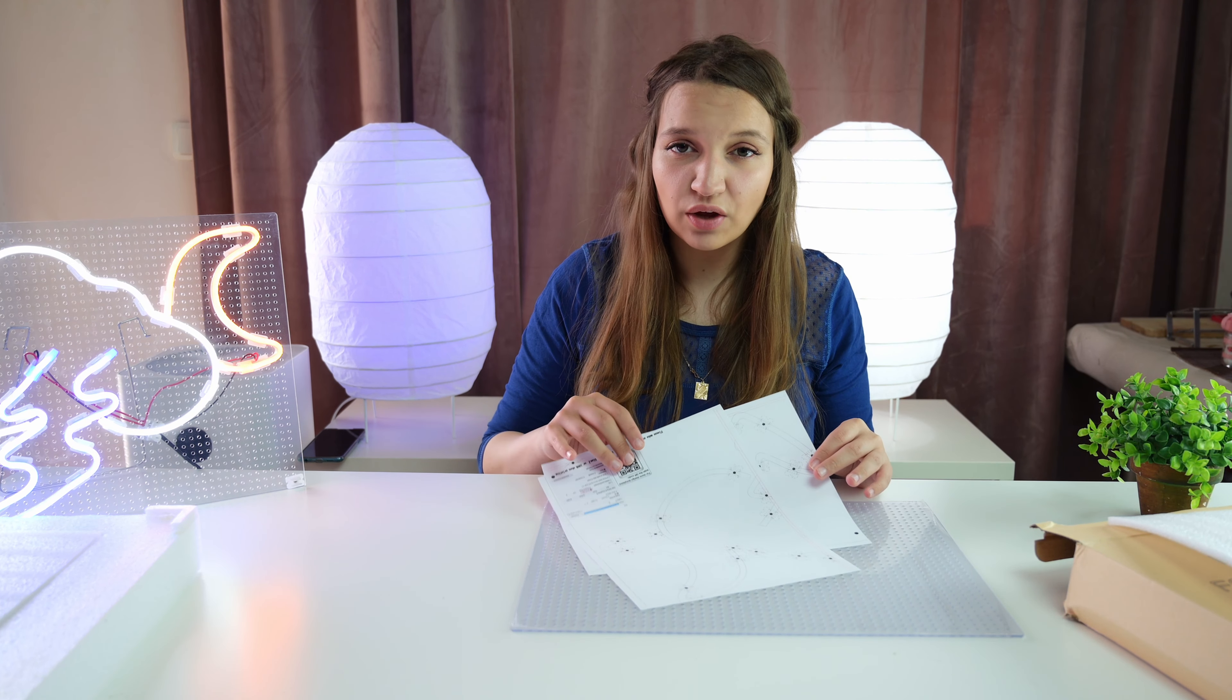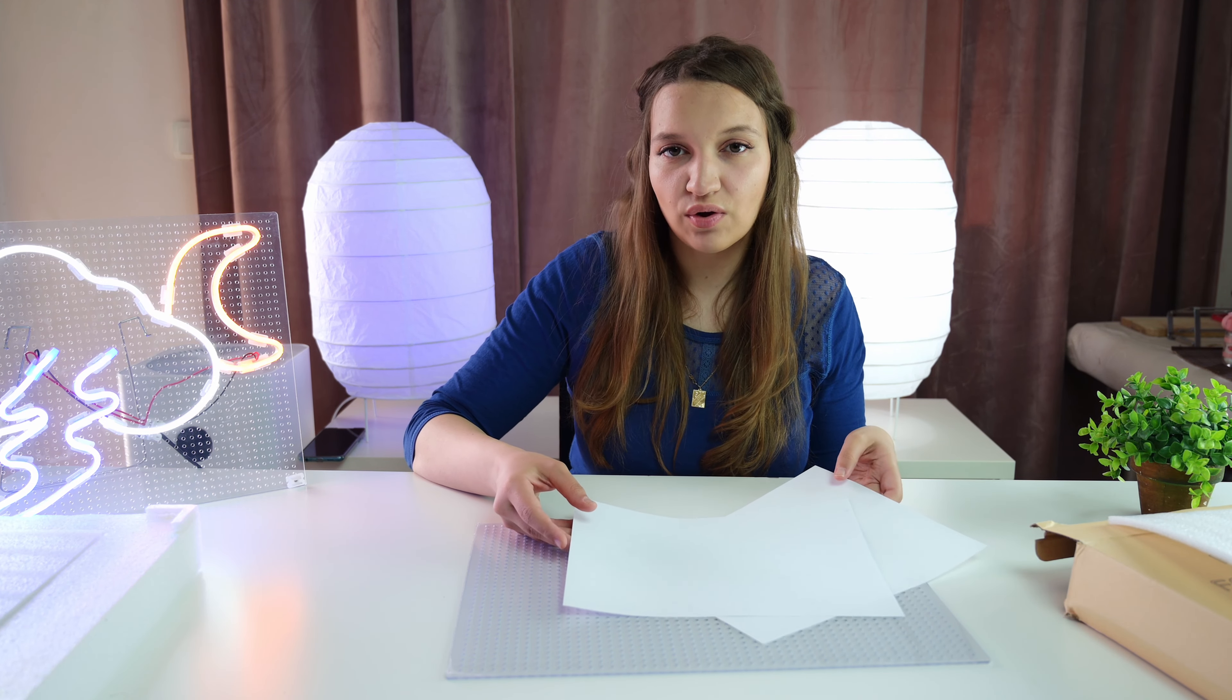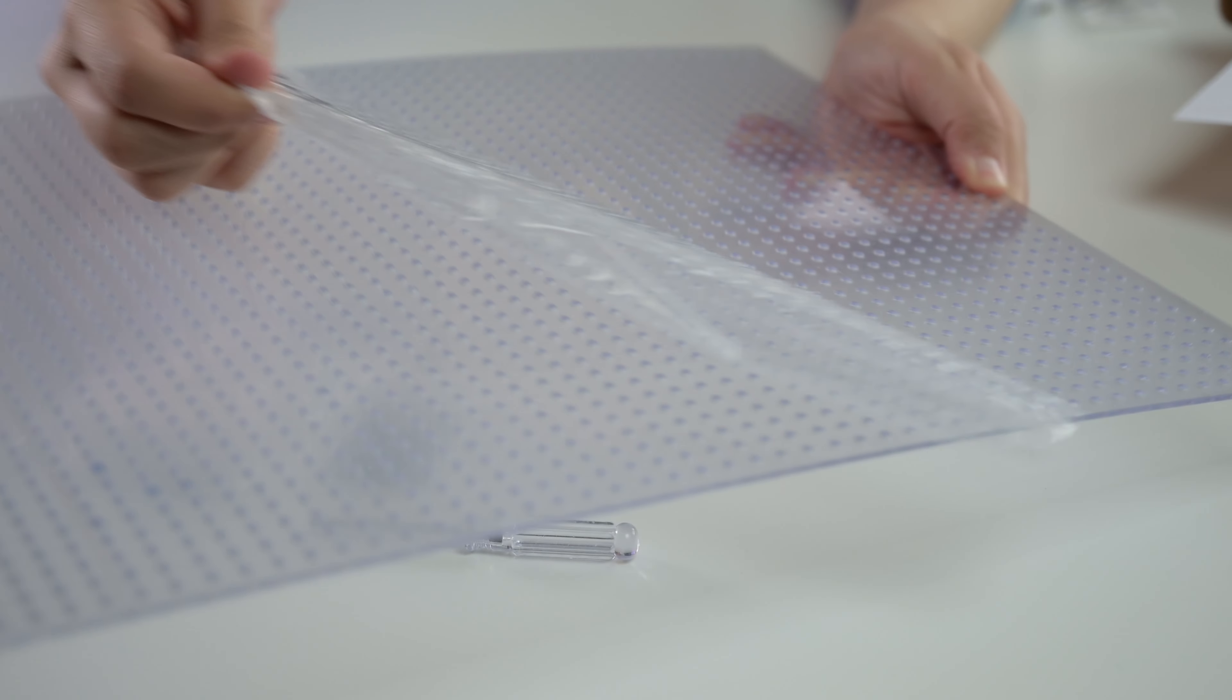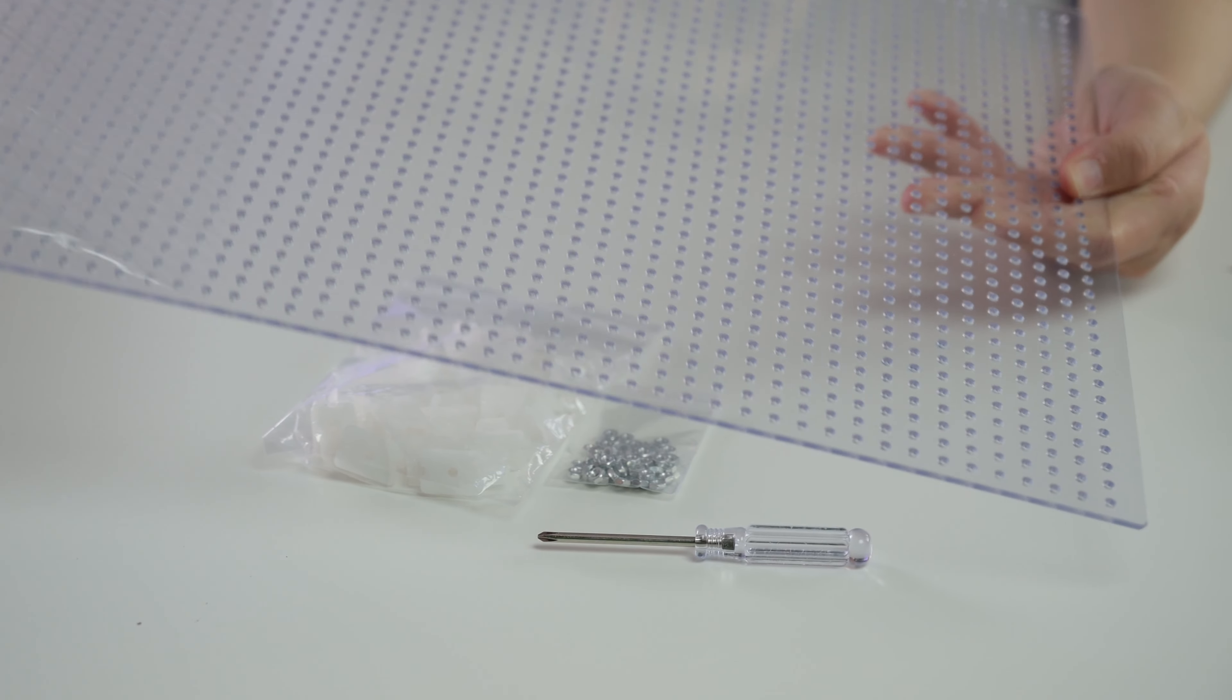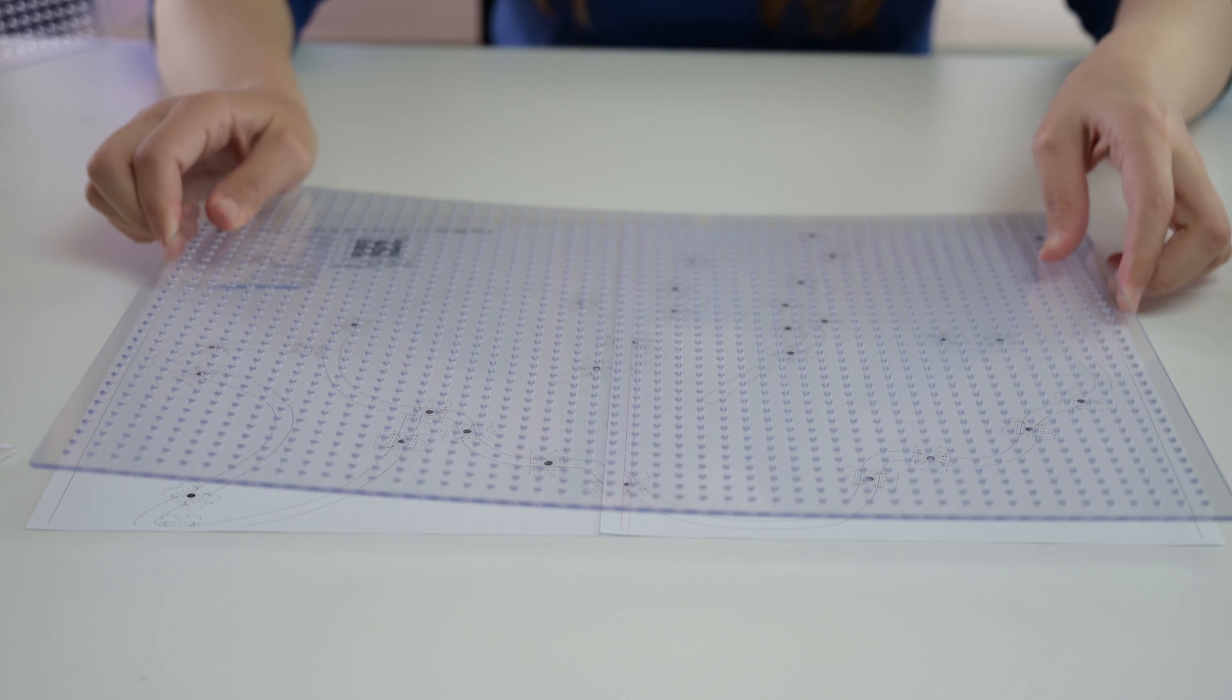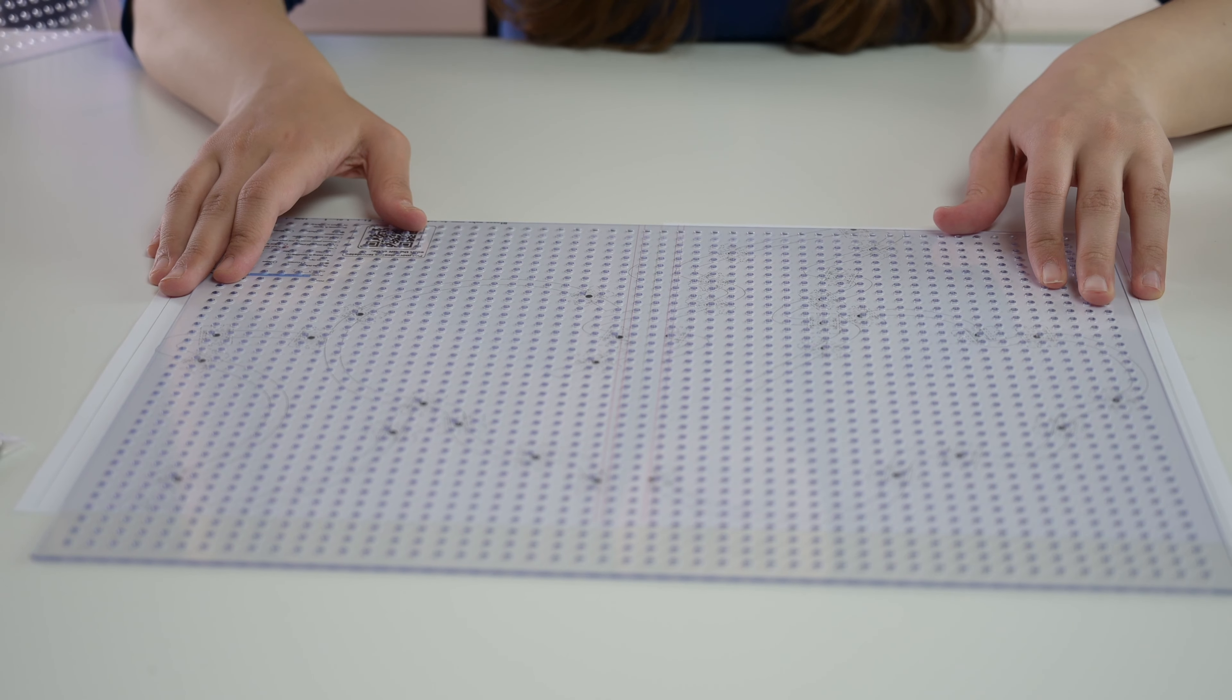The first step is to print out a design template and overlay the transparent back panel on top of it and make sure that the dots are aligned to the holes. This is our template and this is our back panel. Make sure the black dots are aligned to the holes of the transparent back.